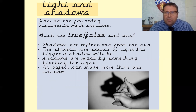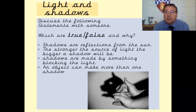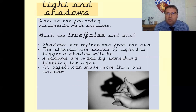So turn off the video and with an adult go through these statements and decide whether they are true or false. I'll read them out to you. Shadows are reflections from the sun. The stronger the source of light the bigger the shadow. Shadows are made by something blocking the light. An object can make more than one shadow. Pause the video, talk to someone about which of those sentences are true and which are false, and why that might be.